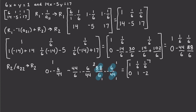We're almost home. All we have to do now is convert that 1/6 in the A12 position into a 0, and then we're done. We're going to use the formula: R2 times the opposite of A12 plus R1, and store the result in R1. So it's going to be 0 times negative 1/6 plus 1, and 1 times negative 1/6 plus 1/6, which becomes 0. And negative 2 times negative 1/6 plus 1/6.